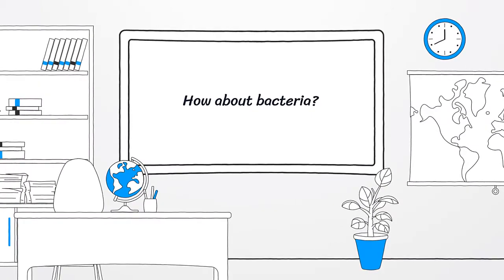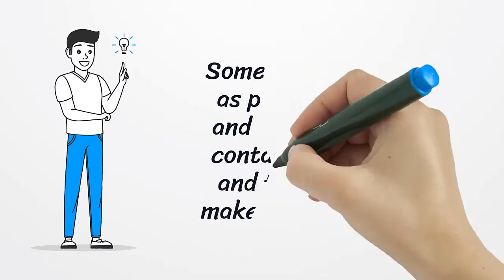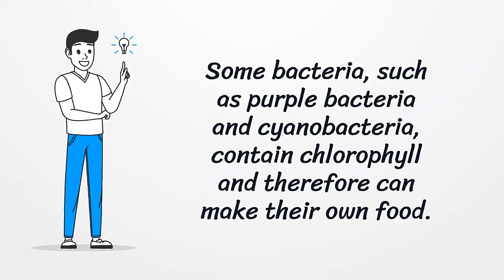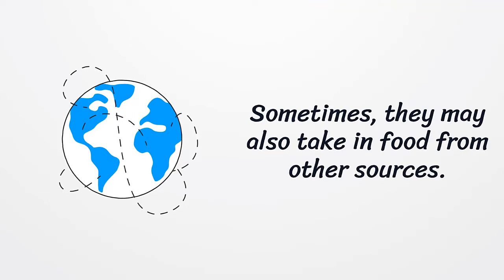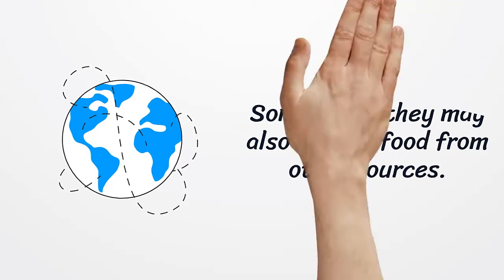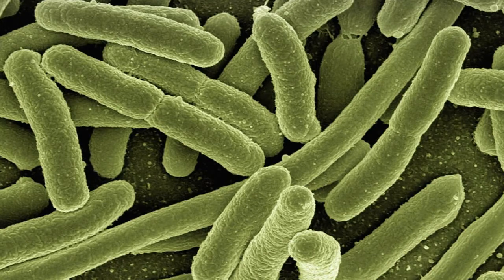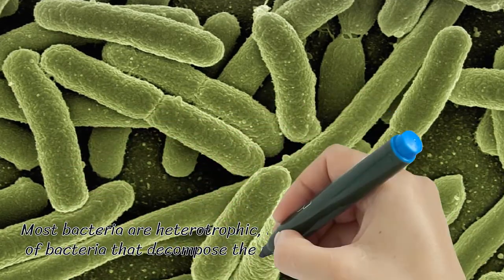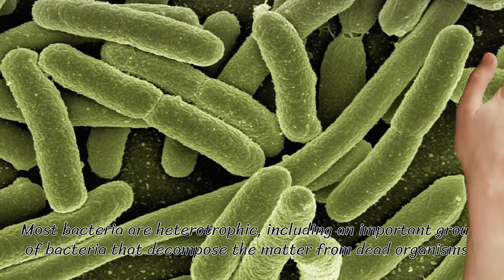How about bacteria? Some bacteria, such as purple bacteria and cyanobacteria, contain chlorophyll and therefore can make their own food. Sometimes they may also take in food from other sources. Most bacteria are heterotrophic, including an important group of bacteria that decompose matter from dead organisms.